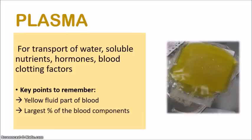Let's begin with the plasma. The plasma is the fluid portion of the blood — this is what makes blood a liquid. It is responsible for transporting water, soluble nutrients, hormones, and blood clotting factors. Key points to remember: it is a fluid portion of the blood, and it is yellow, as you can see in the picture with the medical bag holding the plasma. So it is a yellow fluid part of the blood.